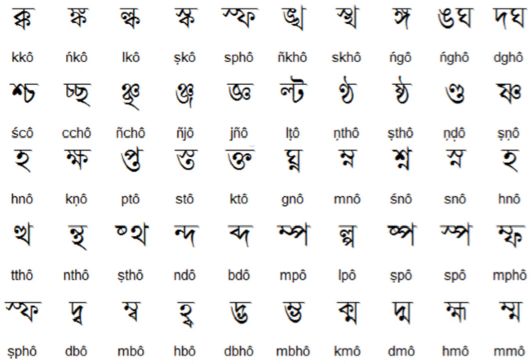The Bengali-Assamese script was added to the Unicode standard in October 1991 with the release of version 1.0. The Unicode block for Assamese and Bengali is U+0980 to U+09FF. See also: Assamese Braille, IPA for Assamese, Romanization of Assamese.